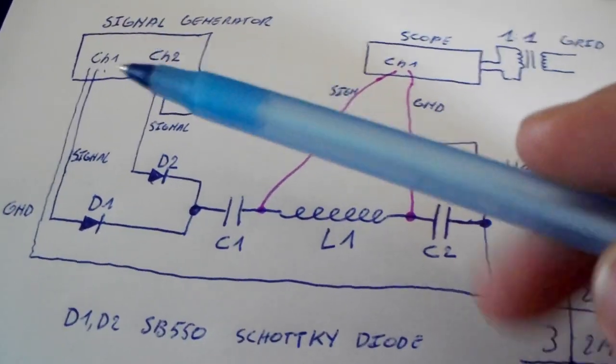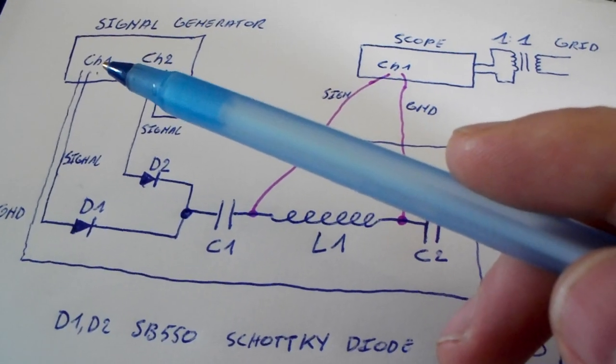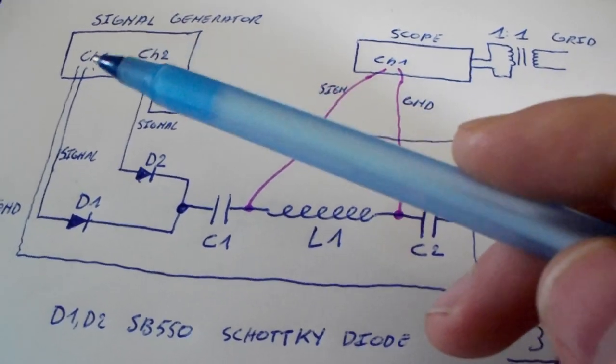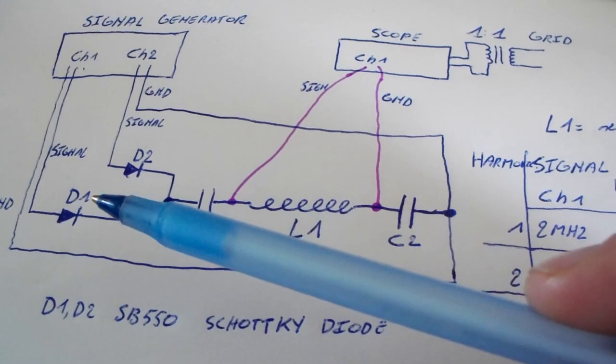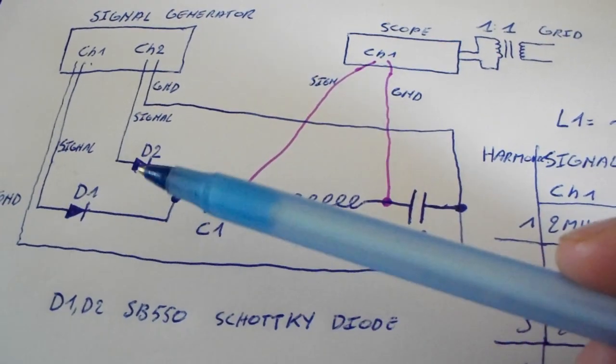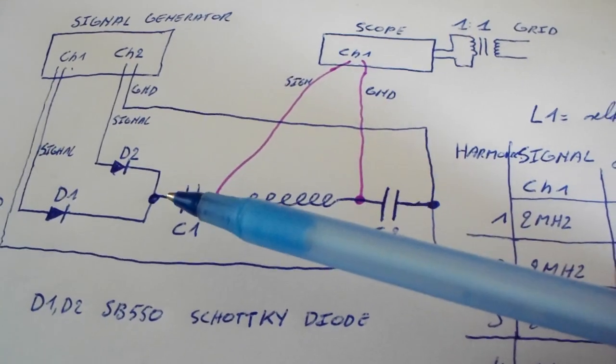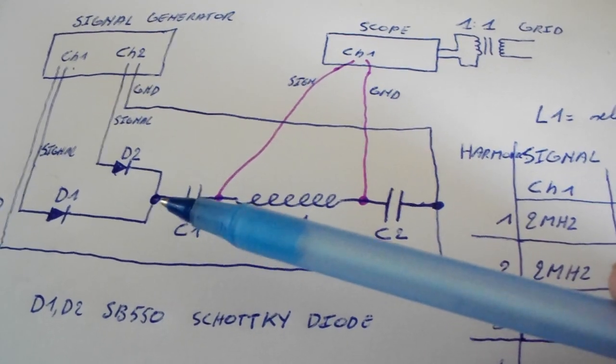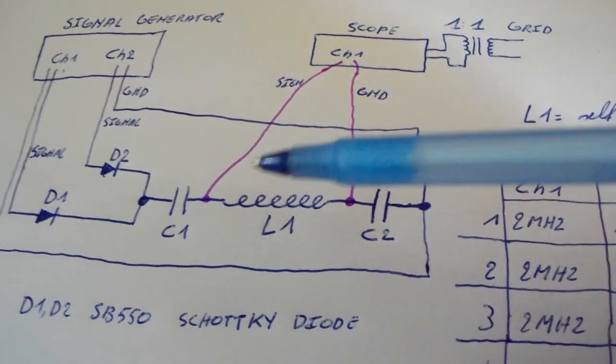What I'm going to do is I have my signal generator with two channels, and each channel goes to a Schottky diode so I can do the frequency mixing.